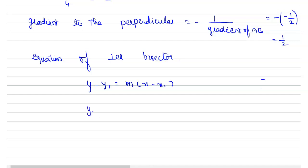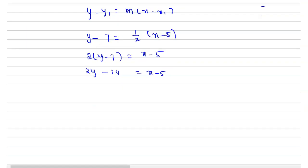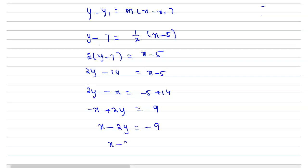From this we can have y − 7 = (1/2)(x − 5). So 2(y − 7) = x − 5, giving 2y − 14 = x − 5. Therefore 2y − x = −5 + 14, so −x + 2y = 9, which gives us x − 2y = −9, or x − 2y + 9 = 0. This is the equation of the perpendicular bisector.